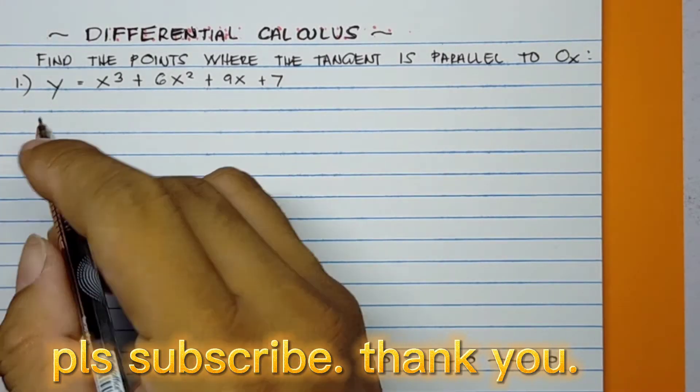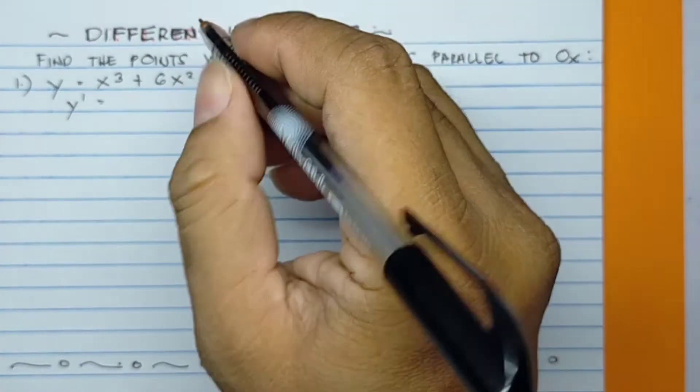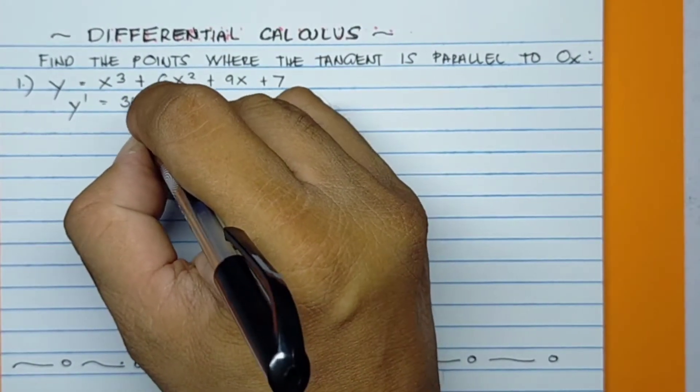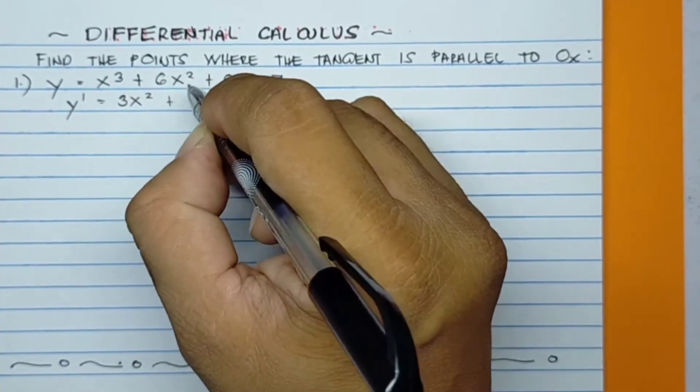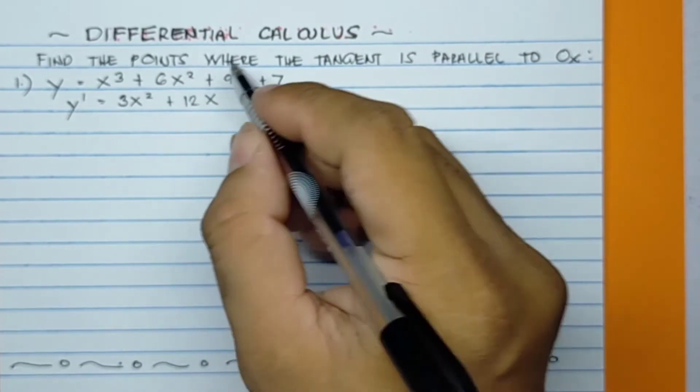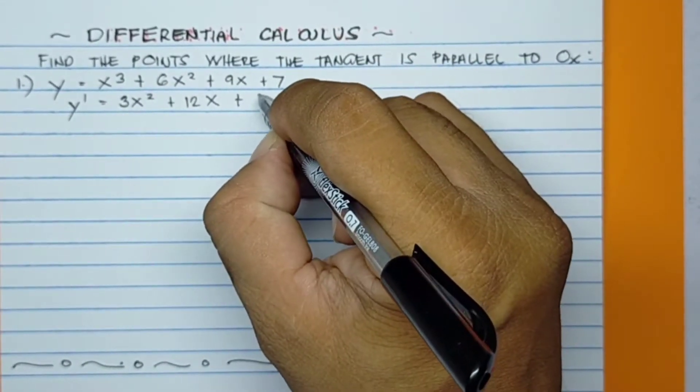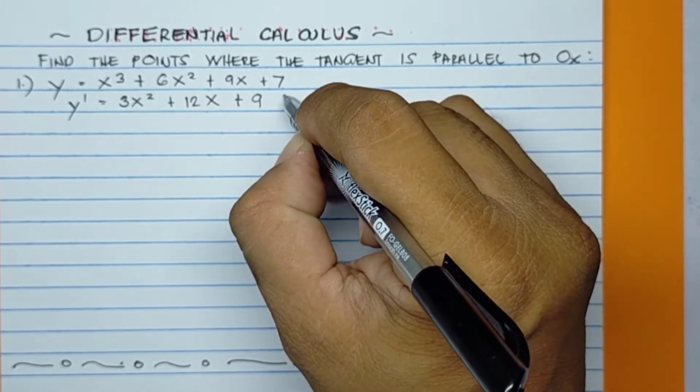So first process, we'll derive this equation. The derivative dy/dx equals 3x² plus 2 times 6, that is 12x. 2 minus 1 will become x, and 9x will become 9. And this constant term is 0.